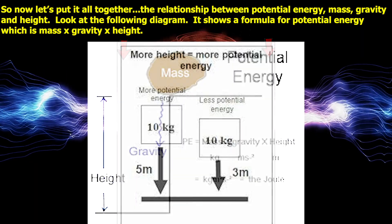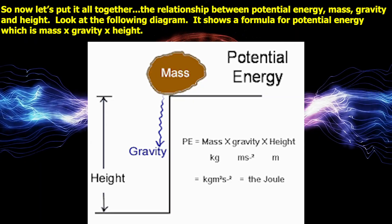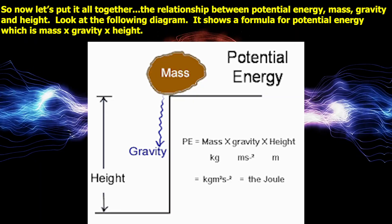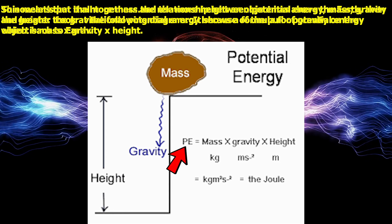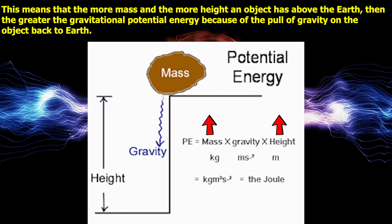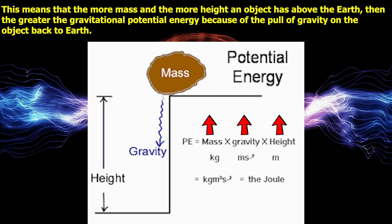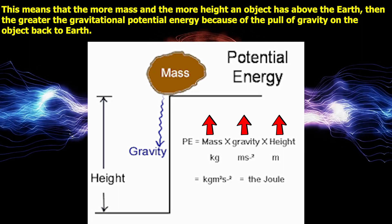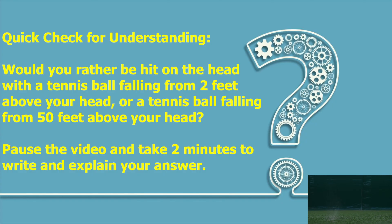Now let's put it all together — the relationship between potential energy, mass, gravity, and height. The diagram shows the formula for potential energy: mass times gravity times height. This means that the more mass and the more height an object has above the earth, the greater the gravitational potential energy, because of the pull of gravity on the object back to earth. Quick question: would you rather be hit on the head with a tennis ball falling from 2 feet above your head or a tennis ball falling from 50 feet above your head? Pause the video and take 2 minutes to write and explain your answer.